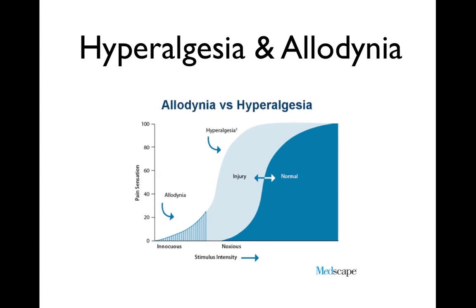A similar graph illustrates the same concept. In normal healthy tissue, shown in dark blue, increasing the noxious stimulus produces a slowly increasing pain sensation that follows a sigmoid curve. If we injure the tissue, it pushes the whole curve to the left, so the area that was mildly noxious becomes much more noxious — that's hyperalgesia — and the foot of the curve, which was previously innocuous, now becomes painful — that's allodynia.